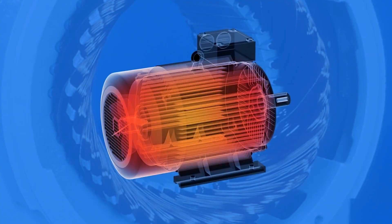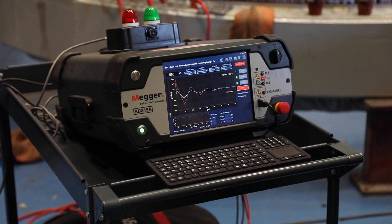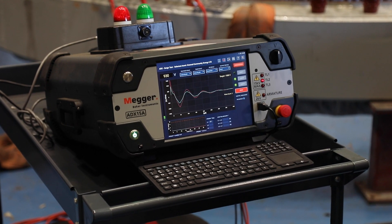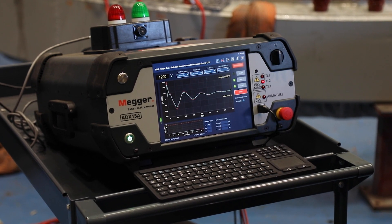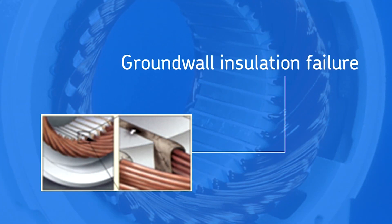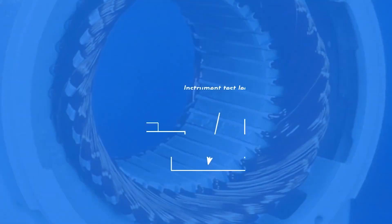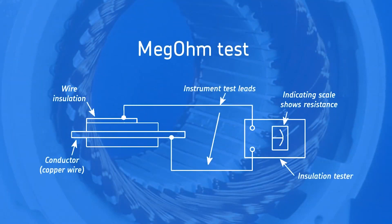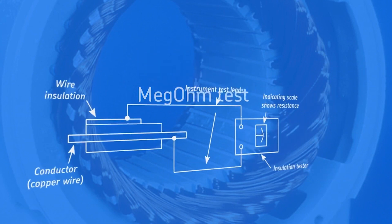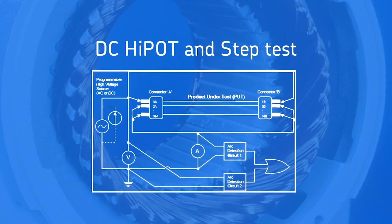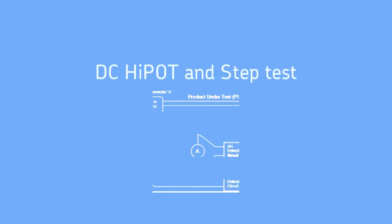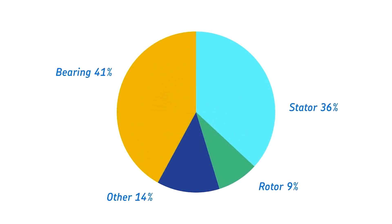When a turn-to-turn fault occurs, the motor will draw a lot of current, quickly overheat, and can melt down in minutes. The surge test can reliably find the strength of turn-to-turn insulation, giving early warning when insulation is weak. When insulation fails and there is a path to the core, it is called a ground wall insulation failure, since the stator core is at electrical ground. Ground wall insulation strength is measured with the megohm test at low voltage, but this test misses many failures. A better test is the DC high pot and step test, which measures insulation strength at higher voltages. Stator insulation faults are responsible for about 30–40% of motor failures.